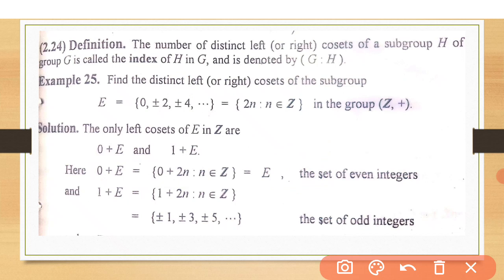So let's take the second element of Z. The second element of Z is plus minus 1. When we add plus minus 1 to all the elements of this subgroup E. When we add 1 to 0, we get 1. This is plus minus 1. When we add plus minus 1 to plus minus 2, we get plus minus 3.